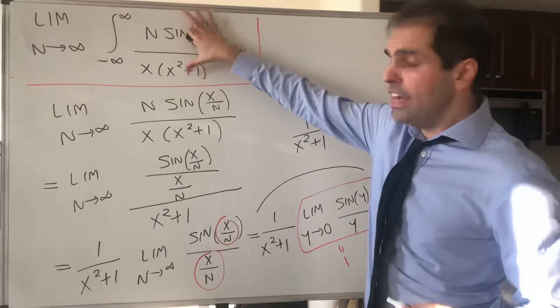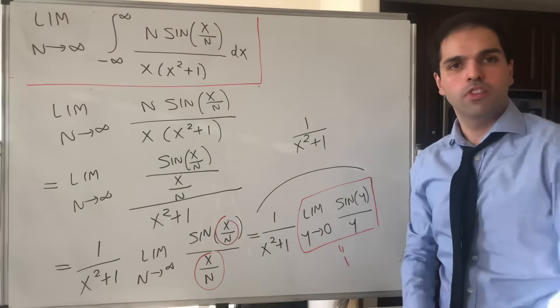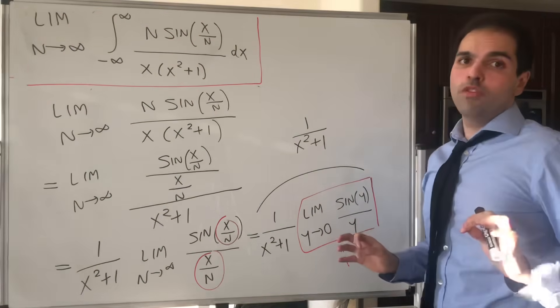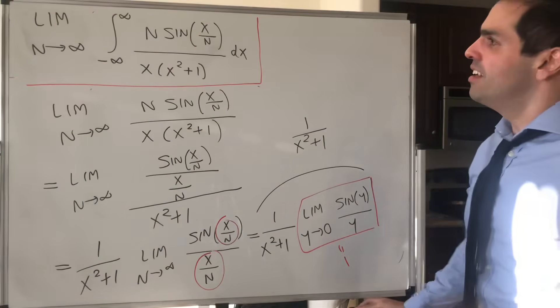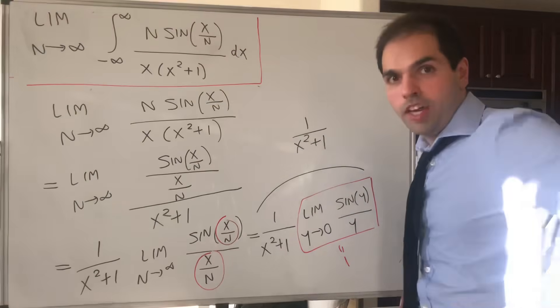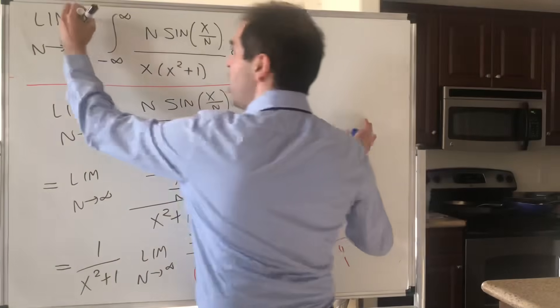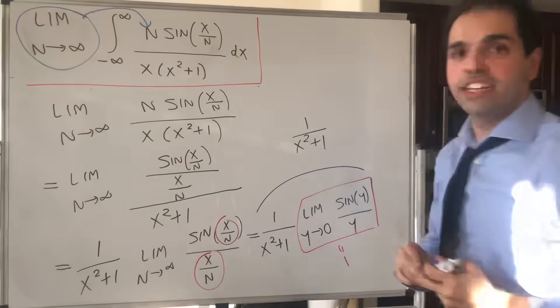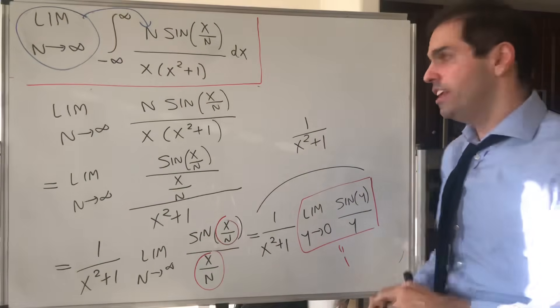So this inside function just goes to 1 over x squared plus 1. Now, let's do a little bit of wishful thinking, which will actually be correct. Suppose, again, mathematician's dream, suppose you can somehow put this limit inside of the integral. Then it turns out we would be done.